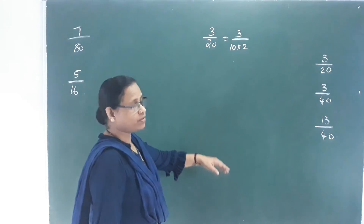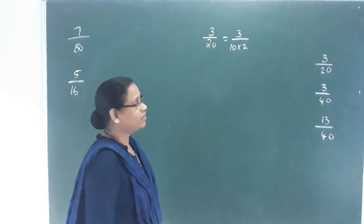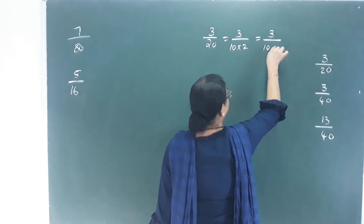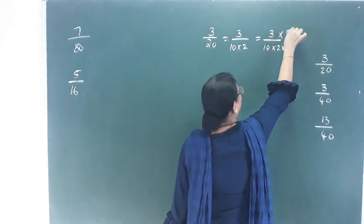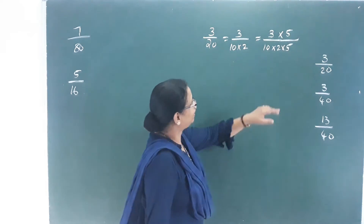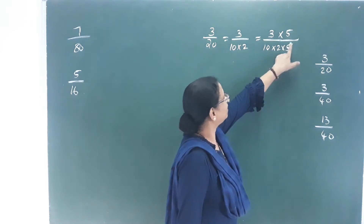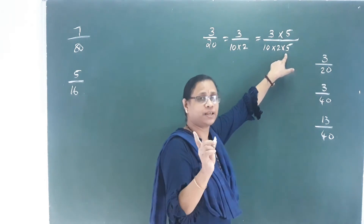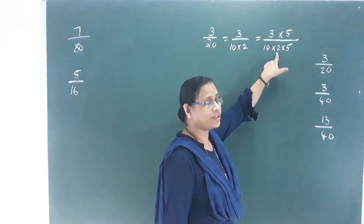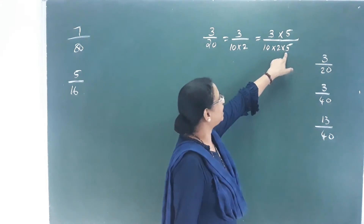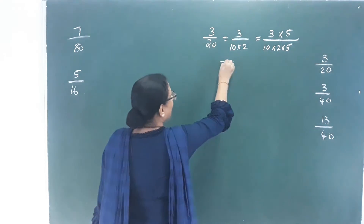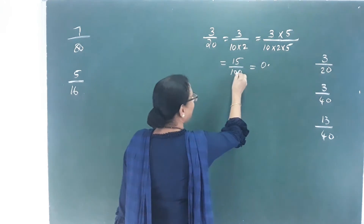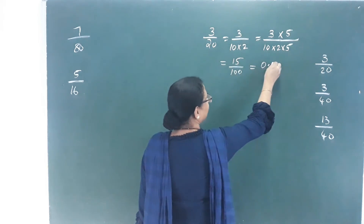Now, 3 by 20. Factorize: 20 is 10 into 2. So 3 by 10 into 2. We change the value — multiply by 5 here and here. 2 into 5 gives 10, so 10 into 10 equals 100. That gives 15 by 100.